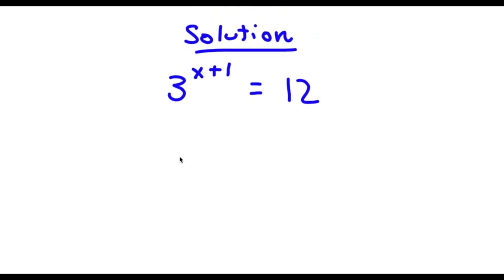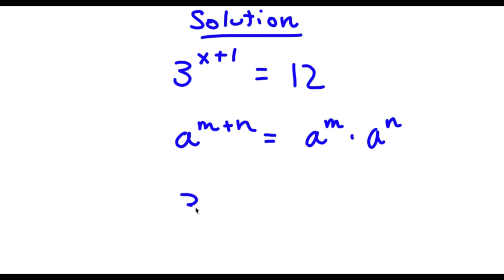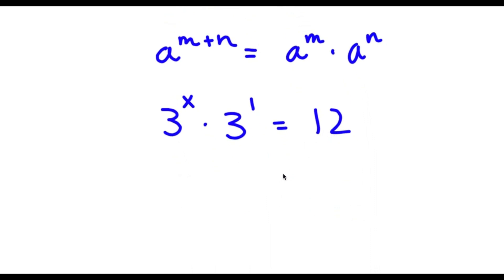Now, if I have something in the form a to the power of m plus n, this is equal to a to the power of m times a to the power of n. So in this case, 3 to the power of x plus 1, we can write this as 3 to the power of x times 3 to the power of 1. Now this is equal to 12. And 12 is the same thing as 3 times 4. So now I have 3 to the power of x times 3 to the power of 1 is equal to 3 times 4.